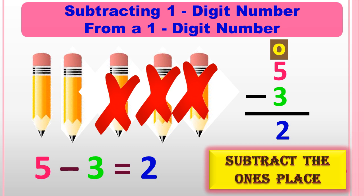Subtraction means taking away. In the given example, 5 minus 3: we have 5 pencils and we must take away 3 pencils from them, so the pencils left are 2. In this slide, we are performing subtraction by the column method, which means arranging the numbers one by one in their respective places. Here we have one-digit numbers, 5 and 3. Since it is a one-digit number, it has only one place, that is the ones place. Arrange it in the column method. So 5 minus 3 is equal to 2. Thus, the required difference is 2.